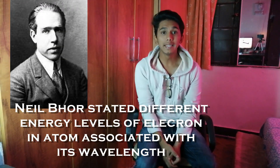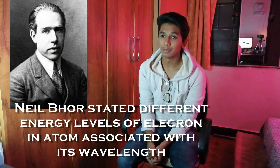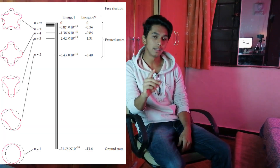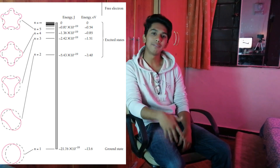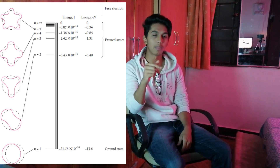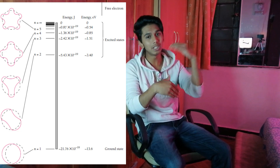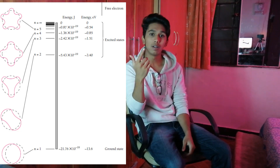Now that we know what matter waves are, let's understand the energy levels of an electron in an atom. Niels Bohr stated that the ground state — the first orbital of the electron — will have one wavelength, and the second orbital will have two wavelengths for the electron. As we go higher in energy levels, the number of wavelengths for the electron keeps increasing.